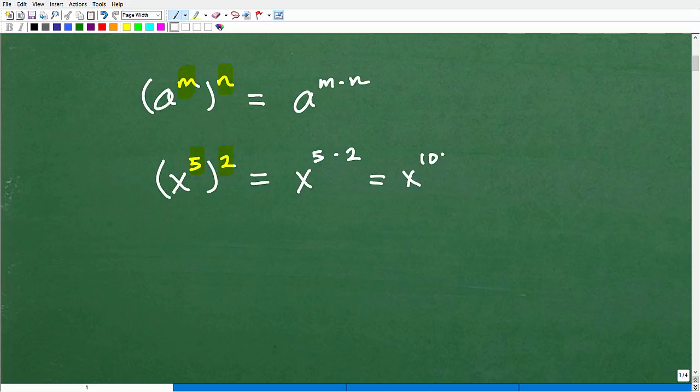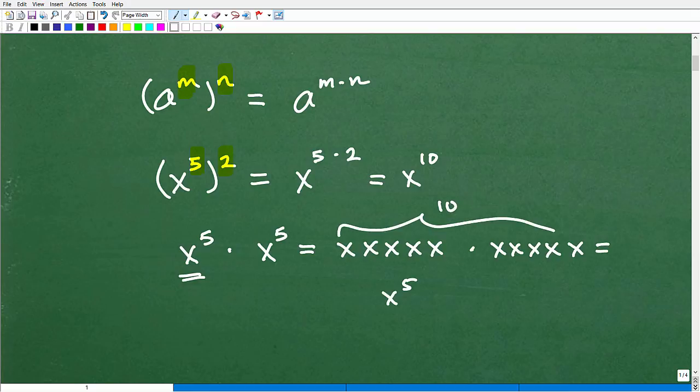Now we can look at this x to the 5th squared. What does this mean, x to the 5th squared? Well it means x to the 5th times x to the 5th. That's what that means. And what does that mean? Well this means there's 5 x's over here. We've got 1, 2, 3, 4, 5. That's x to the 5th right there. And we're multiplying it by itself. 1, 2, 3, 4, 5. So when we multiply all these x's together, it's how many x's? Well of course there's a total of 10. So that's x to the 10th power.